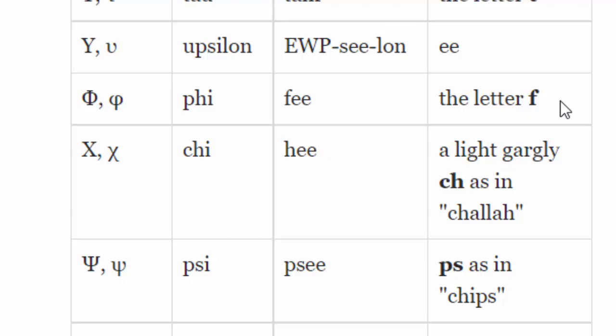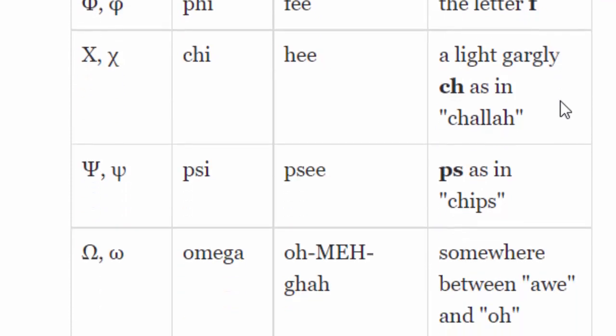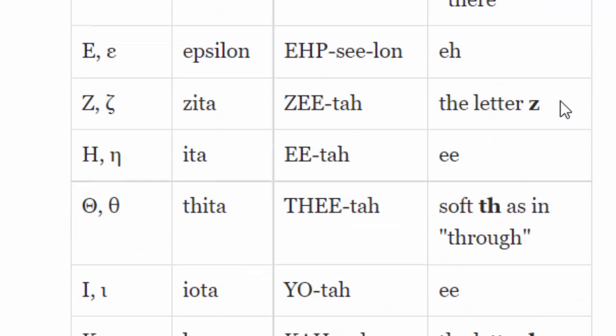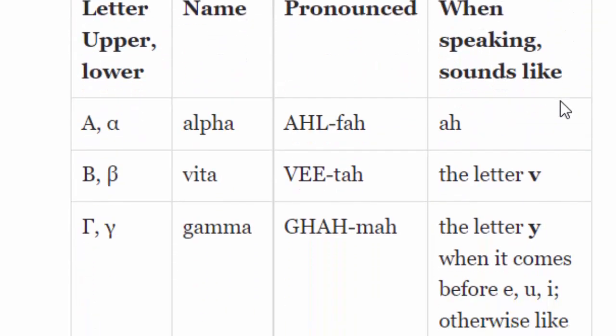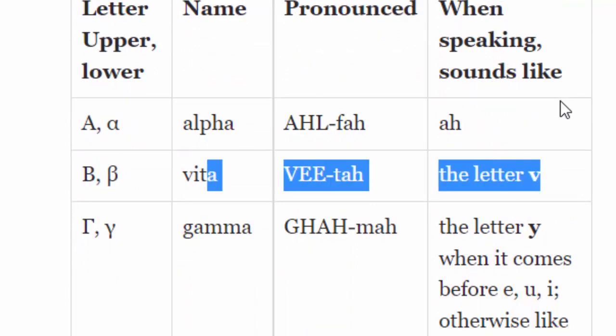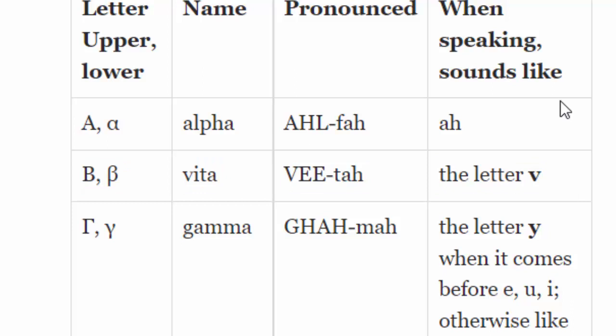Upsilon makes the E sound. Chi makes the sound like in 'chulla.' Psi seems to be a little different — it makes the sound like in 'chips,' with the P sound at the end. And omega, which begins with an O, actually makes the O sound. But all of them correspond just like every other language, except their B makes the V sound. It's standing out there like a sore thumb.